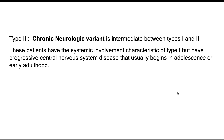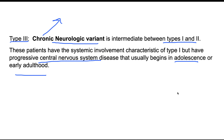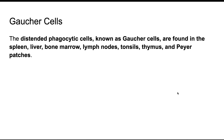Type 3 is intermediate between Types 1 and 2. It is chronic but also a neurological variant, meaning the person will have systemic involvement along with CNS disease. However, the CNS disease begins at adolescence or early adulthood, making it intermediate in severity.